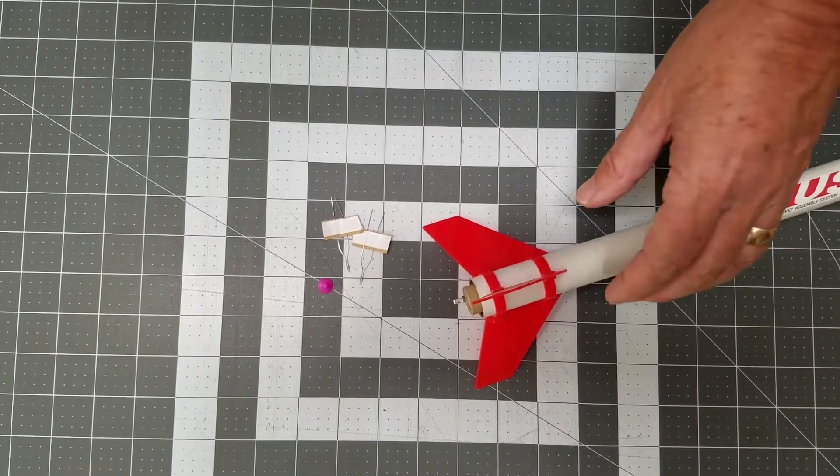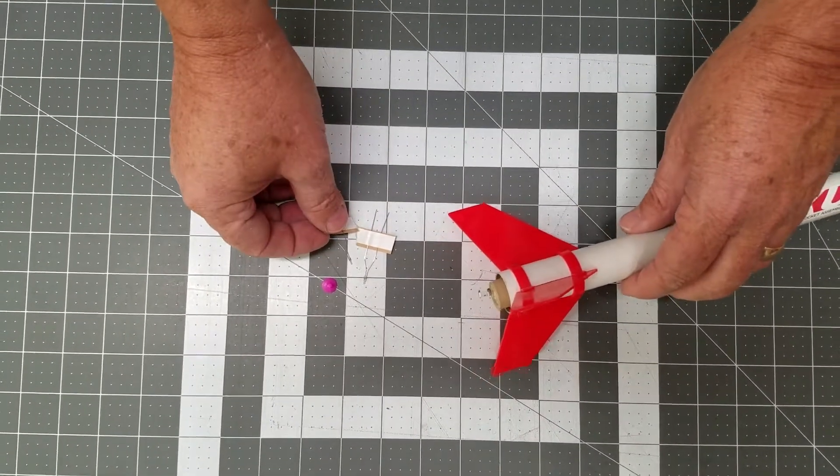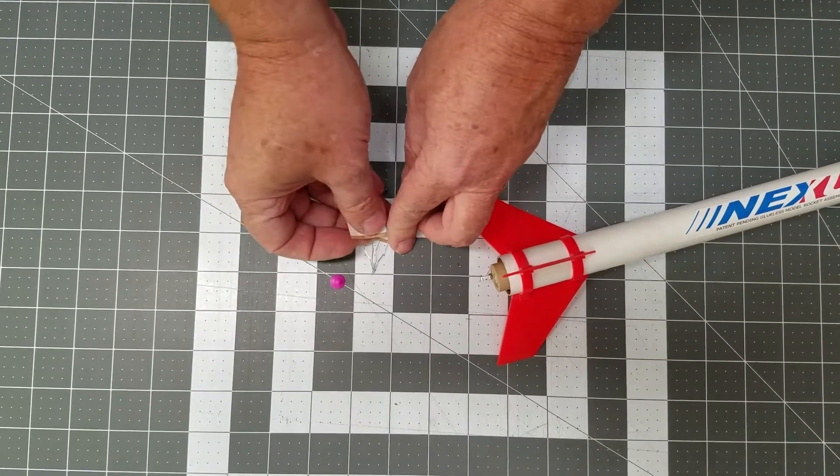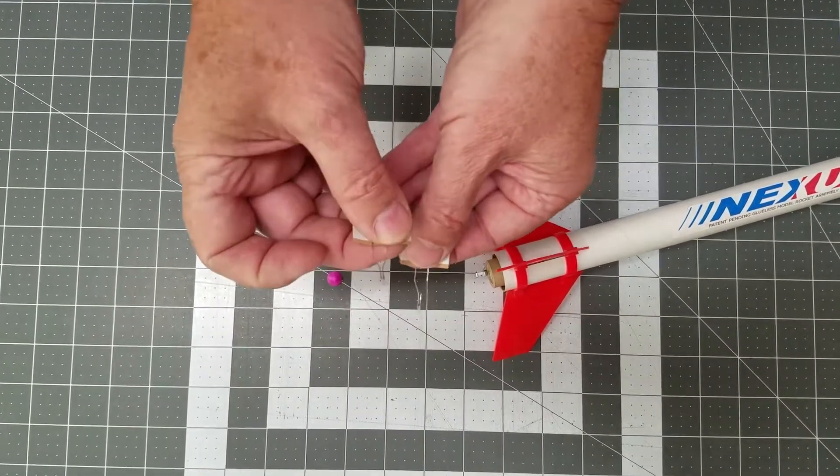This video is about inserting solar igniters into SD's motors. The solar igniter comes in two pieces that can be torn apart.